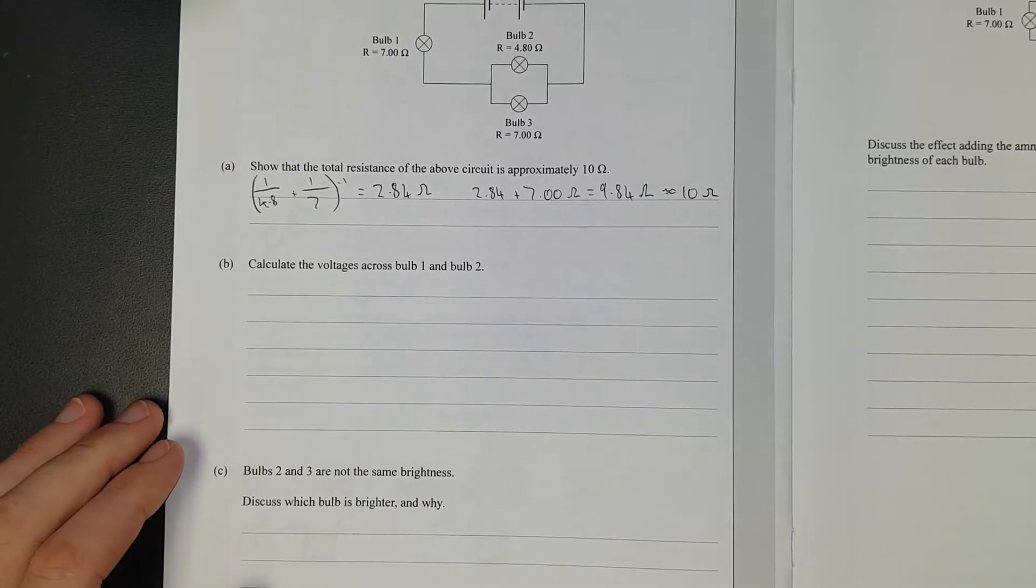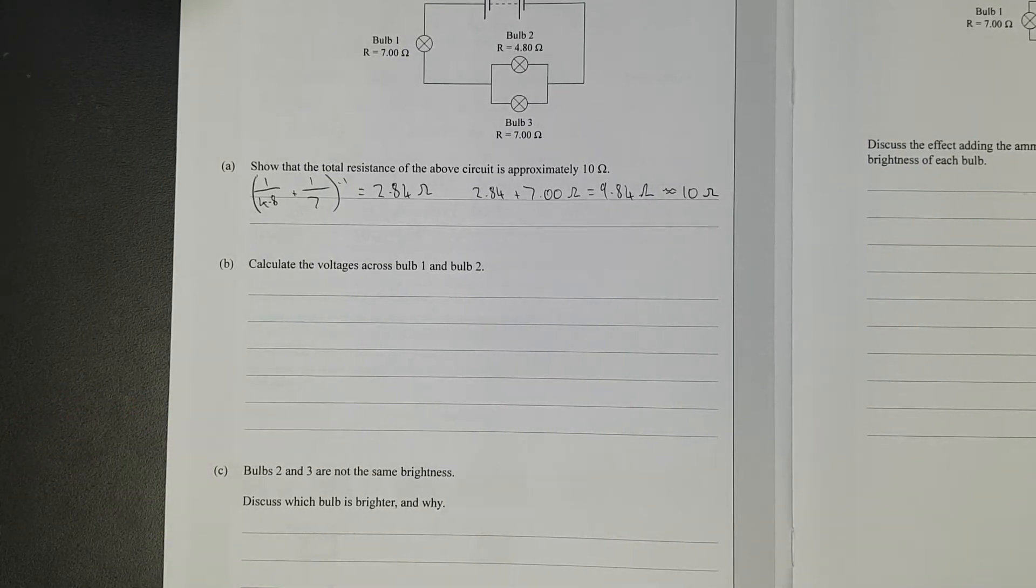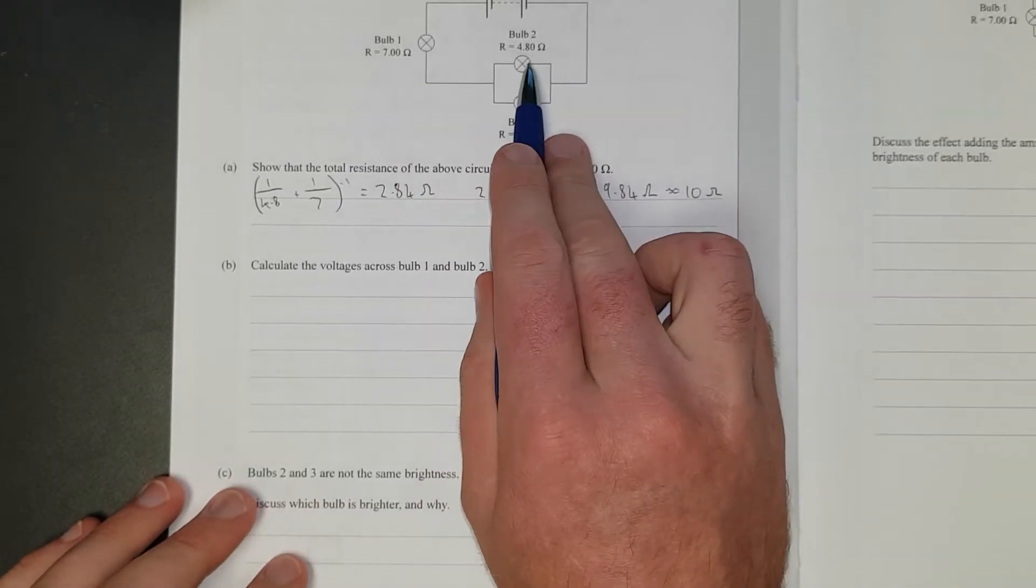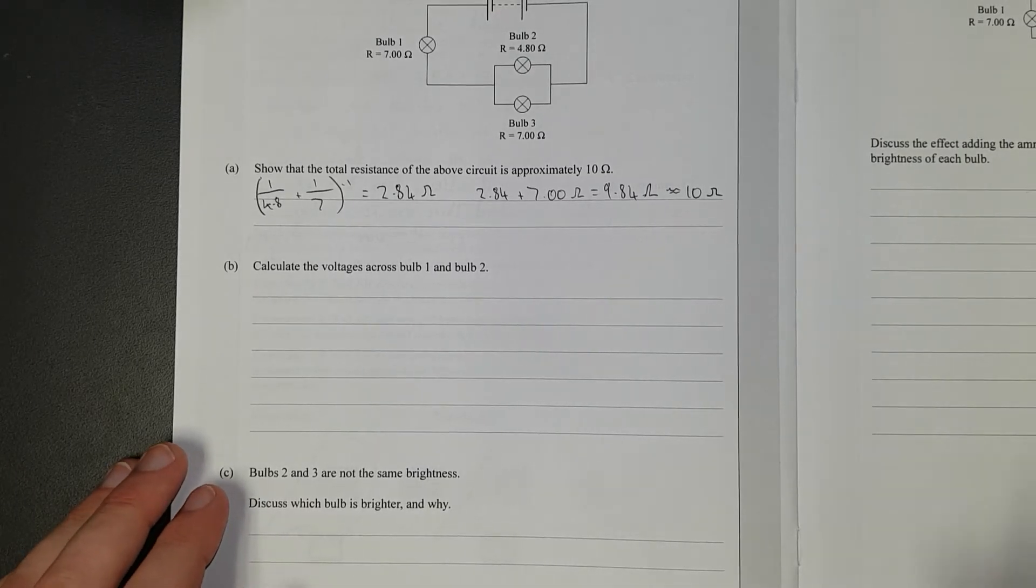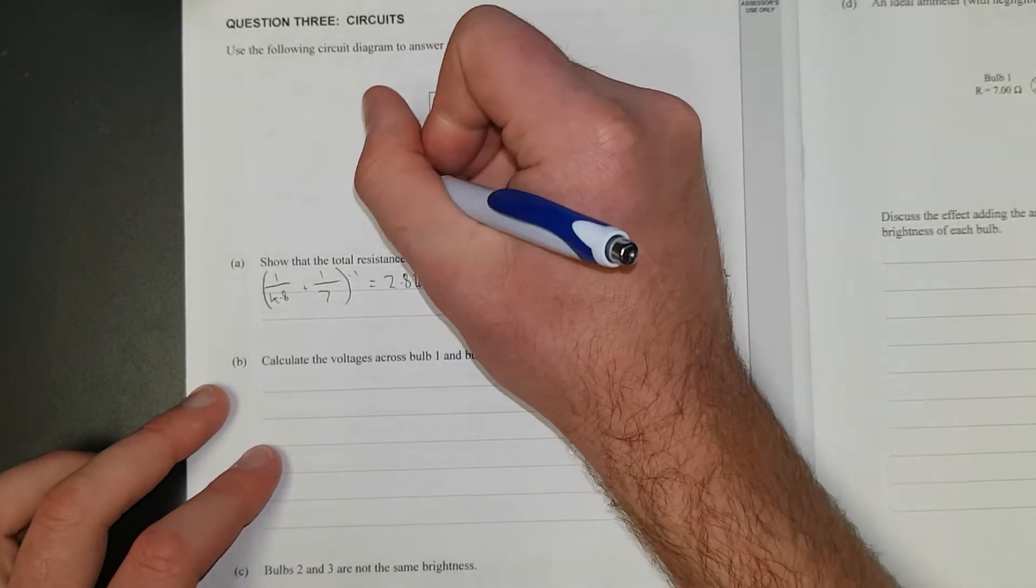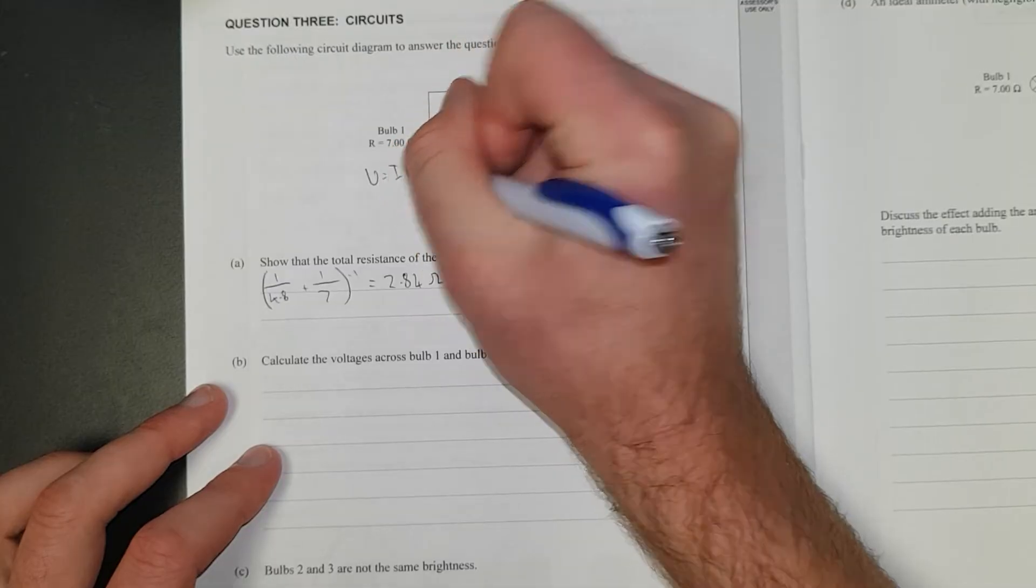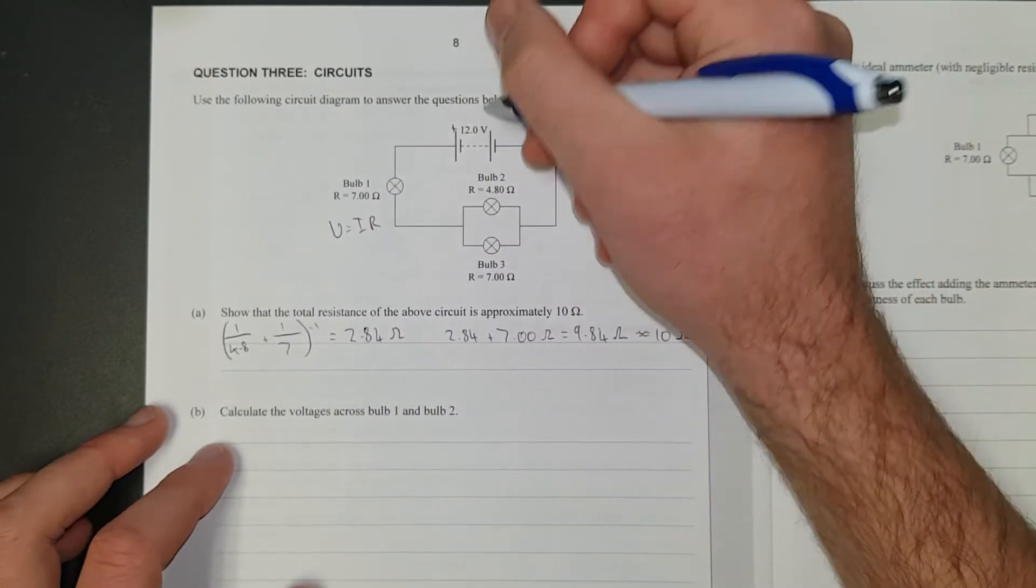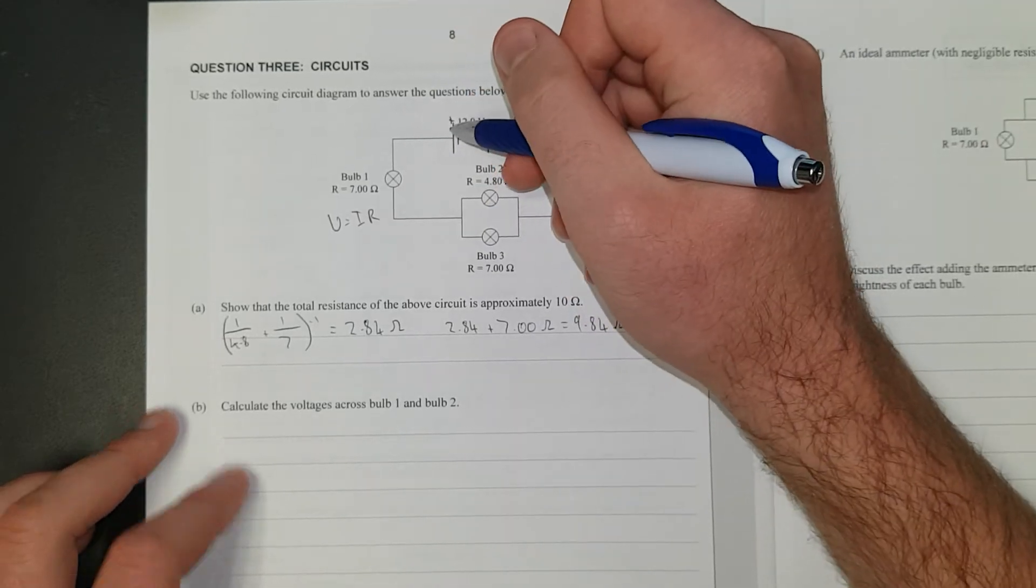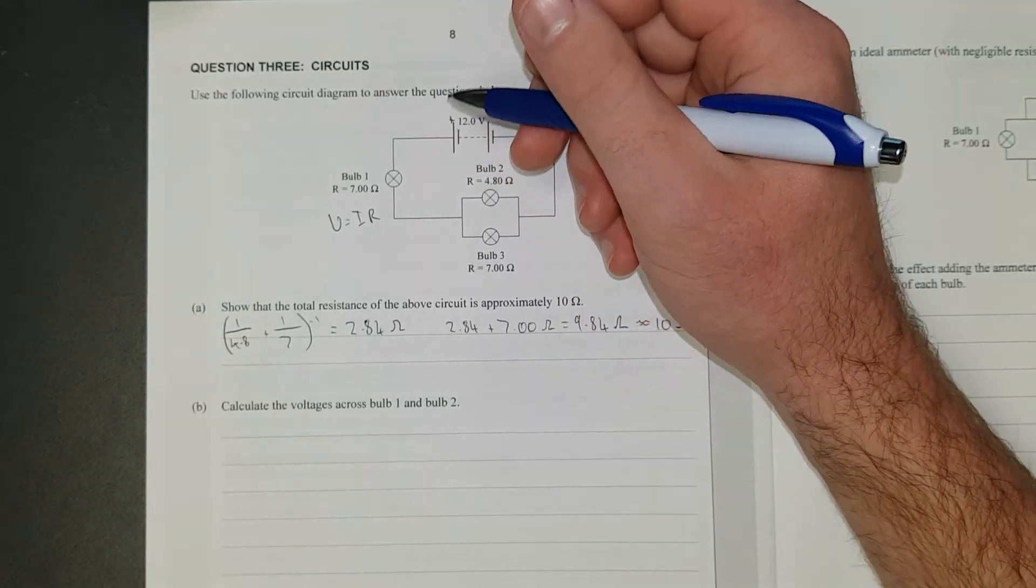Calculate the voltages across bulb 1 and bulb 2. So basically that one there and that one there. Right, so what we need to do is find the total current because to find the total voltage V equals IR. The current is going to flow, this is the positive side of the battery, and the wee ones are negative. Assuming conventional laws, we assume current flows from positive to negative.